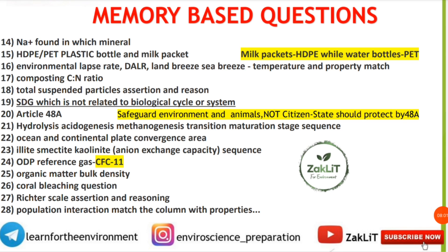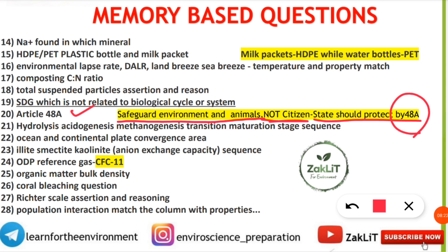A question came from Article 48A, Article 51, and Article 21 — all repeatedly emphasized as very important. The correct answer was Article 48A because the statement referred to safeguarding the environment and animals as the duty of the state, without including citizens. Article 48A states that the state should protect the environment. Also frequently asked: the sequence of anaerobic digestion stages — hydrolysis, acidogenesis, acetogenesis, and methanogenesis.